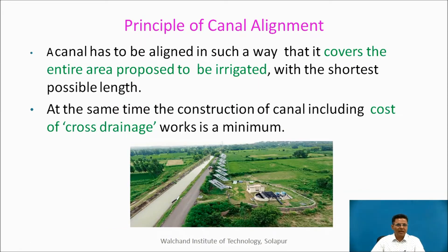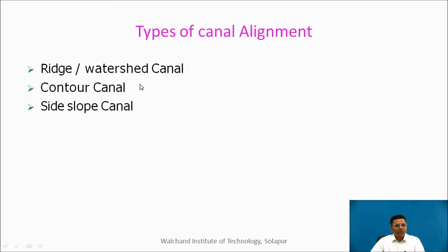Now, the principles of canal alignment. A canal has to be aligned such that it covers the entire area proposed to be irrigated and also with the shortest possible length, because if length increases, cost increases. At the same time, the construction cost of the canal, including cross drainage works, has to be minimum. There are basically three types of canal alignments: ridge or watershed alignment, contour alignment, and side slope alignment.